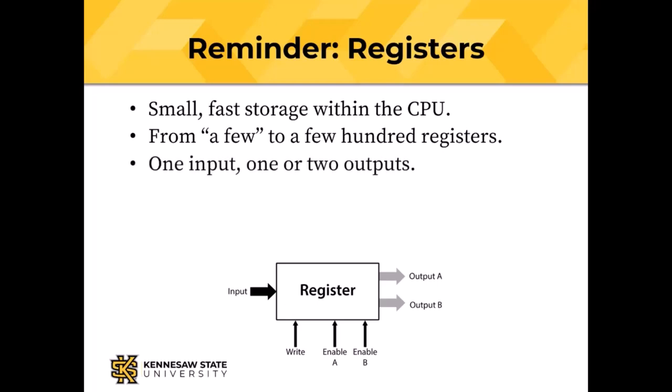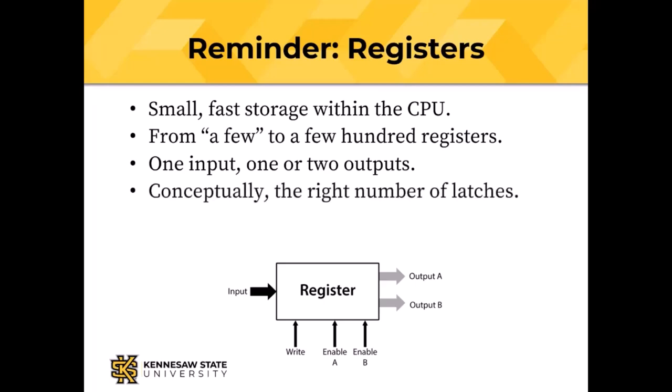Registers can have one input and either one or two outputs. Conceptually, what's in the register is the right number of latches. There are some economies of scale when you're building 64 of those for a 64-bit register, but conceptually it's 64 of those latches.